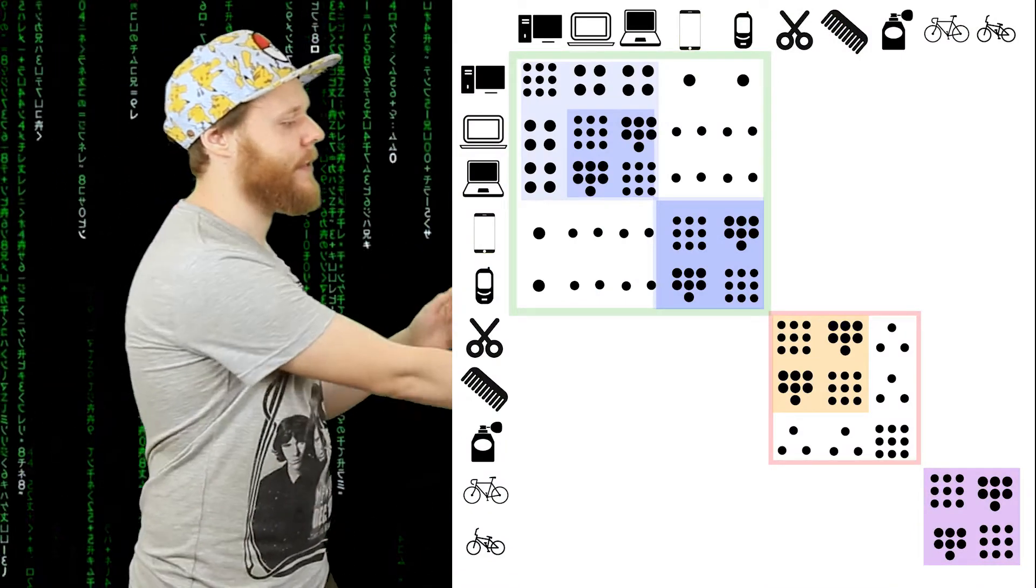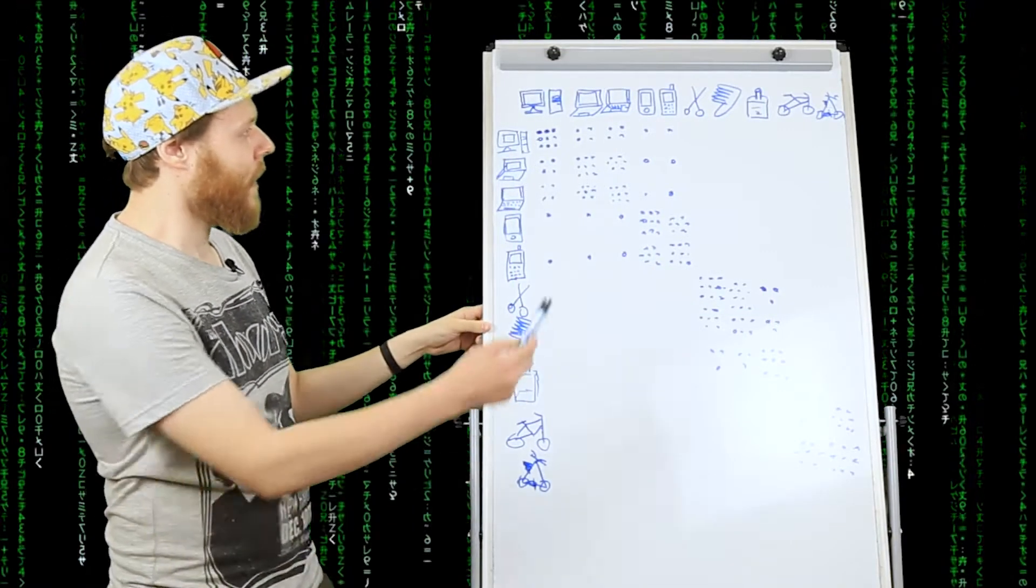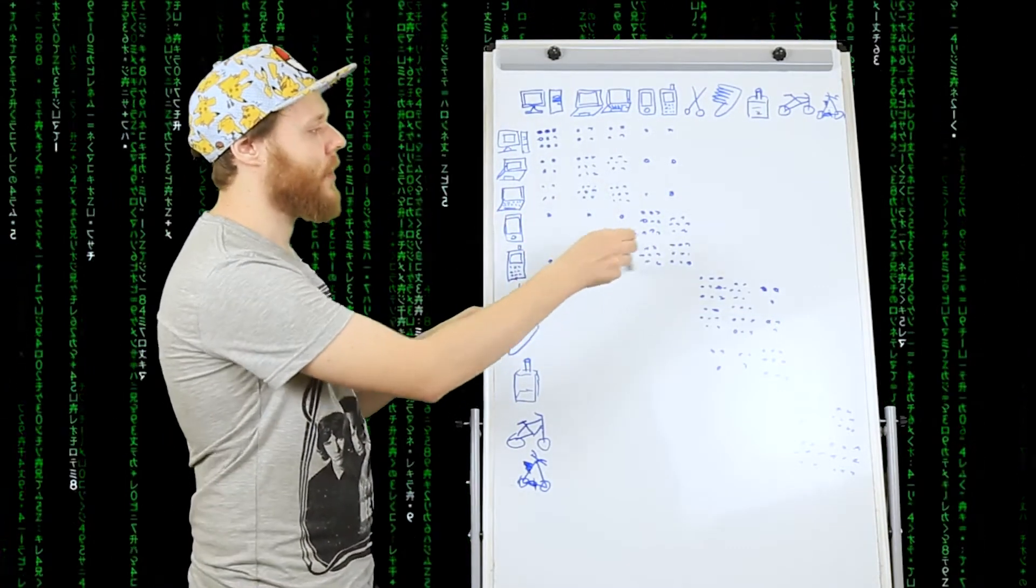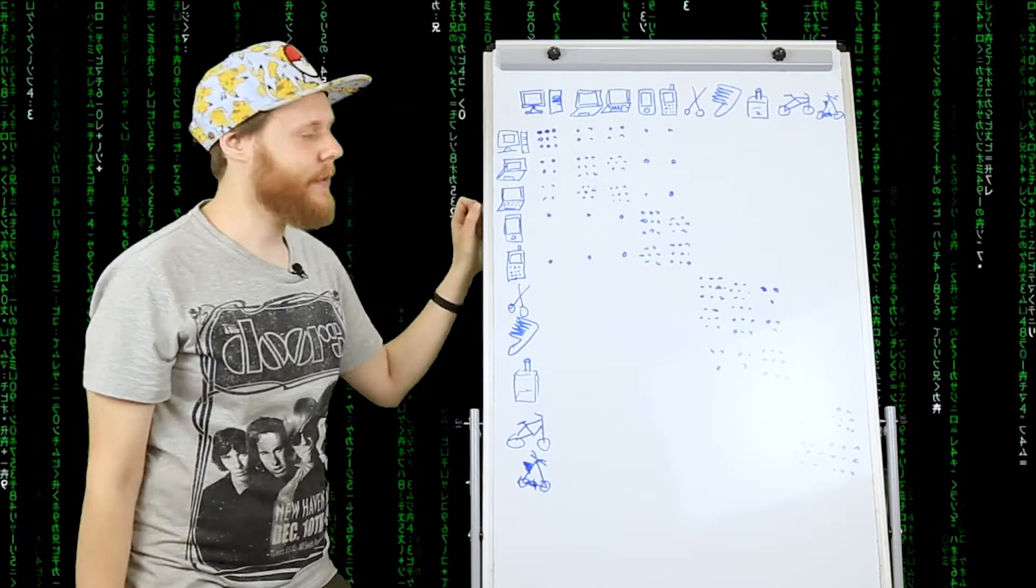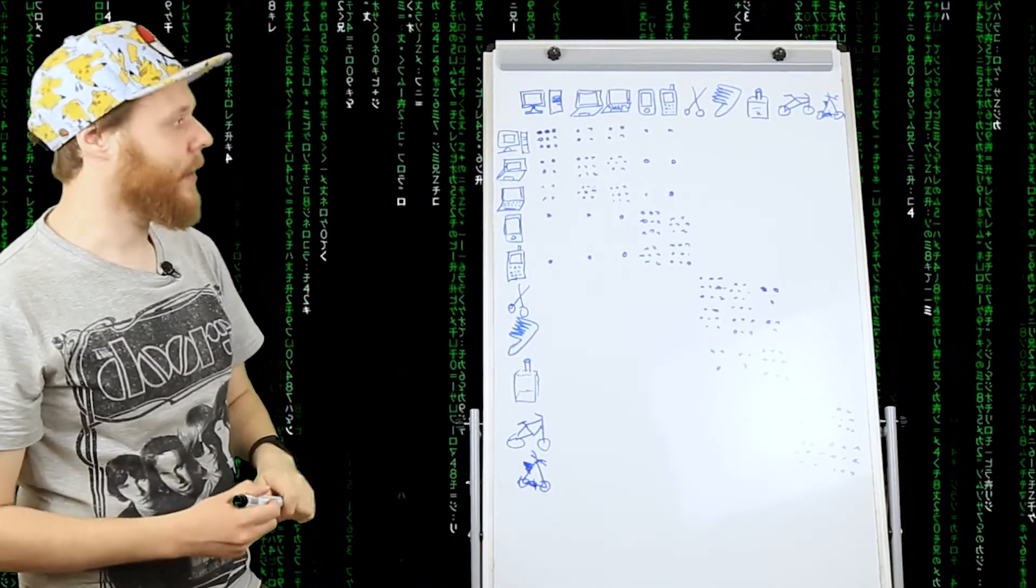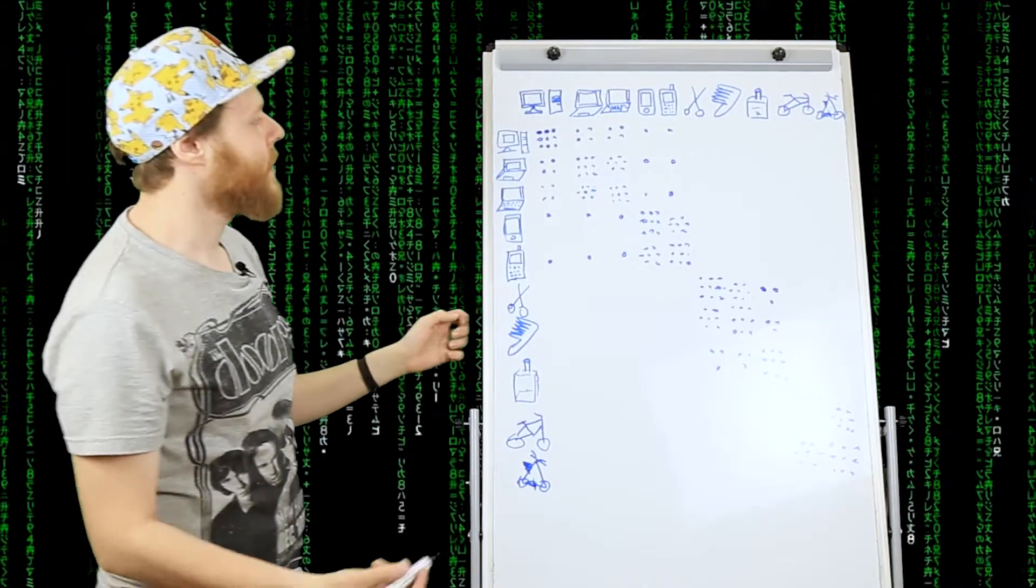И на матрице смежности это выглядит следующим образом. Все объекты, имеющие большое количество серпов, расположены вдоль главной диагонали матрицы смежности. И кластеры можно образовывать следующим образом.